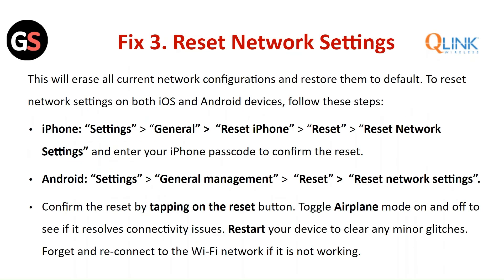Fix Three — Reset Network Settings: this will erase all current network connections and restore them to default. For iPhone, go to Settings, then General, tap on Transfer or Reset iPhone and select Reset. Tap on Reset Network Settings and enter your iPhone passcode to confirm the reset.